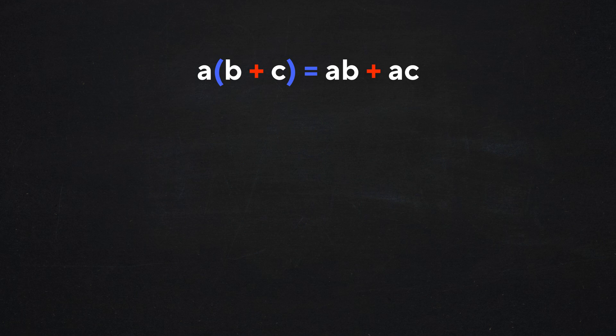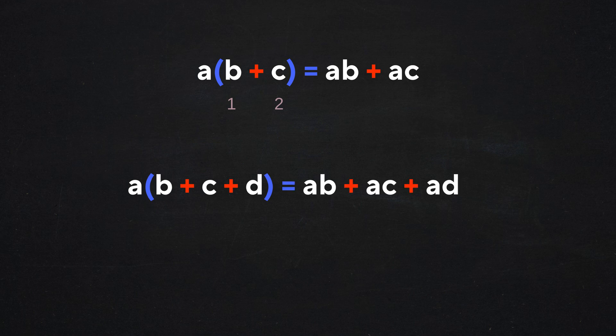The rule is usually shown with two members in the group, but remember that it works for groups of any size. We could have a times the group b plus c plus d, and the equivalent distributed form would be ab plus ac plus ad.